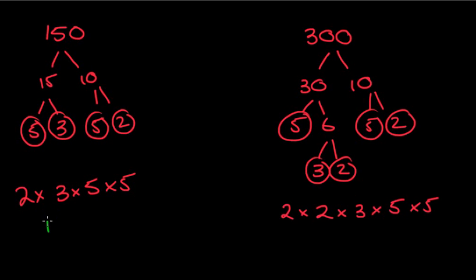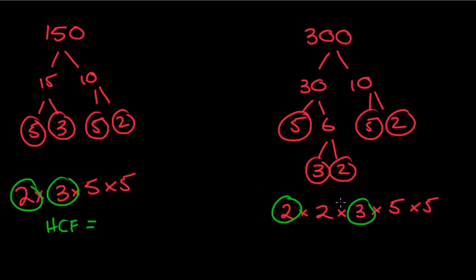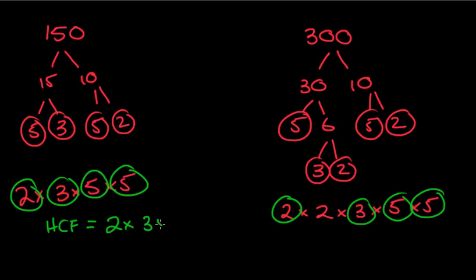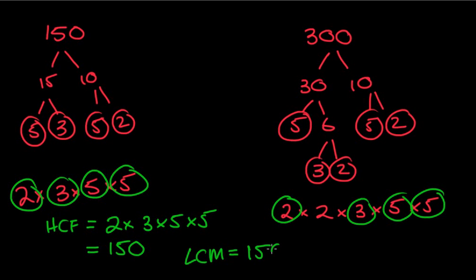Now it's a simple matter of finding what's common. We've got a 2, a 3, and both 5s — all common. So 2 × 3 × 5 × 5 is the shared part, and we know that's already 150. So the highest common factor is 150. For the lowest common multiple, we take that 150 and add whatever's left over — just a × 2. So 150 × 2 = 300 is our lowest common multiple. This makes sense: the multiples of 150 are 150, 300, 450 — and 300 is right there.